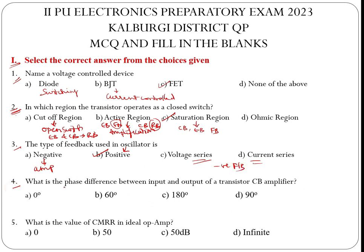Fourth question: What is the phase difference between input and output of a CB amplifier? Again, it is a repeated question — it is 0 degrees. CB and CC both produce 0 degrees, while 180 degrees is produced by the CE amplifier.